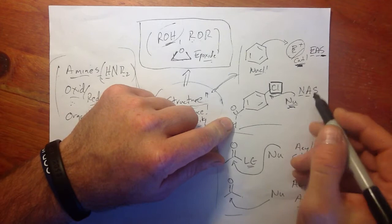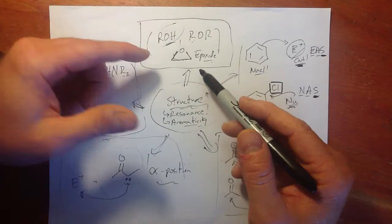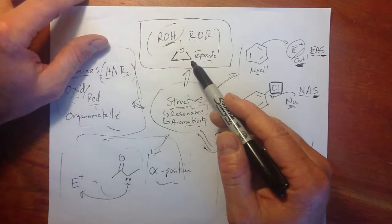That was EAS and NAS. Before that we covered alcohols, ethers, and epoxides in reactions with strong acids or Lewis acids. We noted that epoxides are unique in that they can be attacked by bases or by acid solutions because of the ring strain.